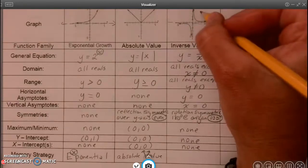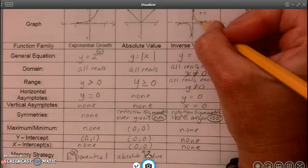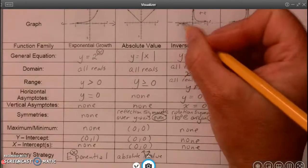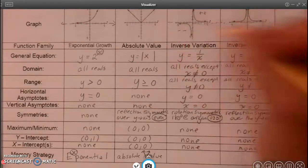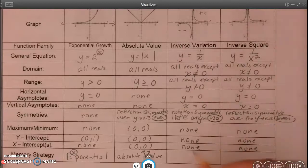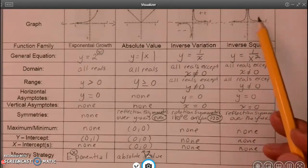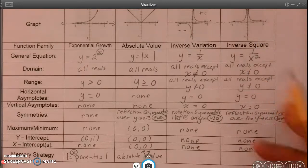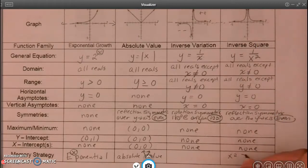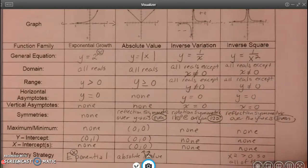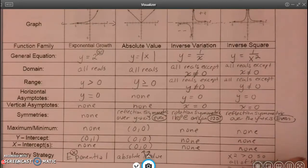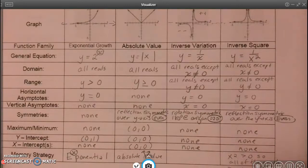And since this quadrant is positive, positive, I have my curve here, and this quadrant is negative, negative, I have my other curve here. And then for the inverse square, I remember they're both up top, because x squared is always greater than zero, so all of the graph is above the x-axis.